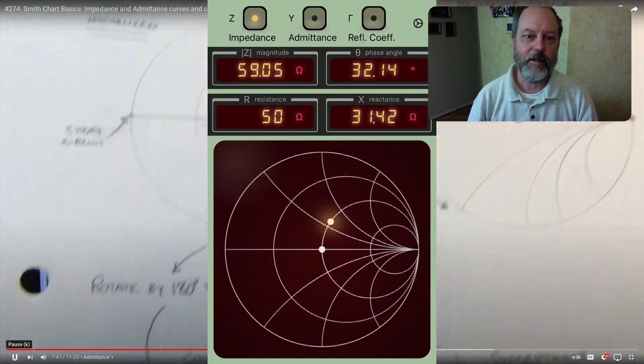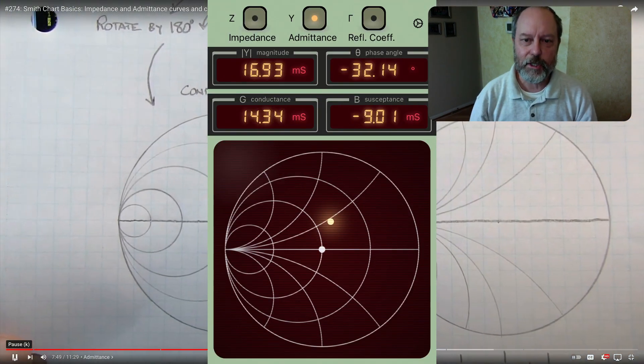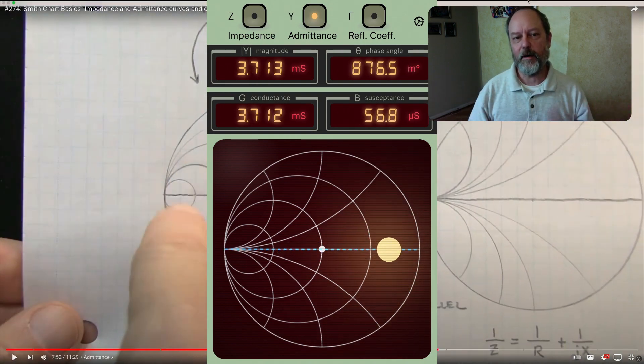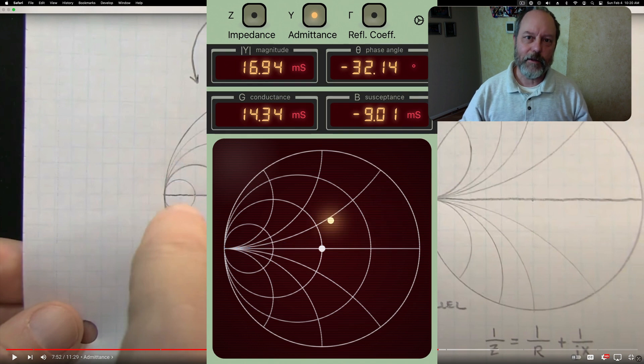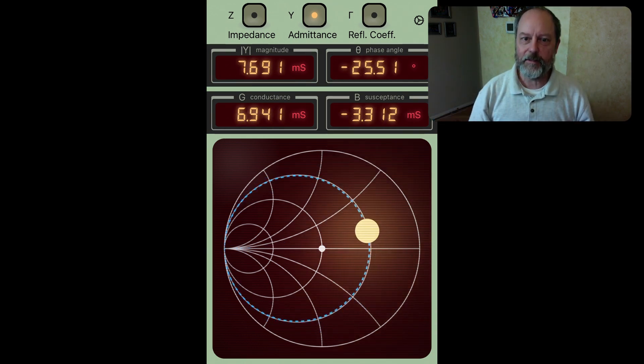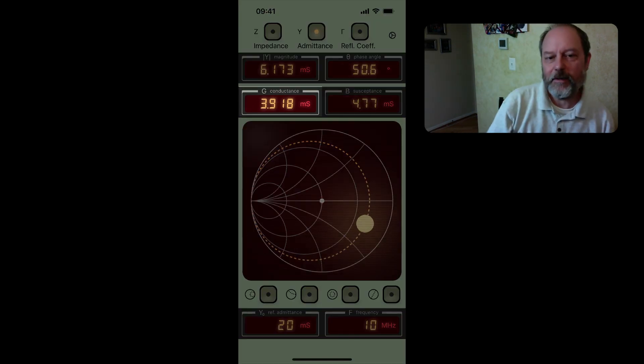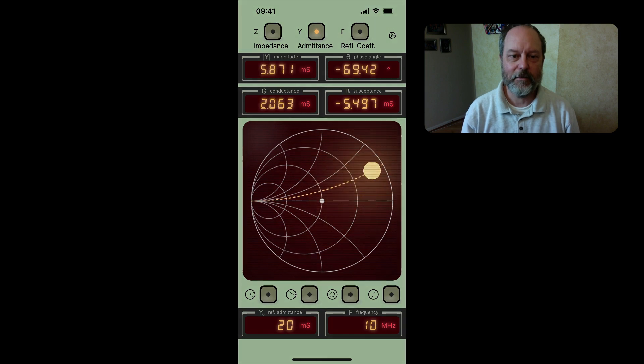And in impedance converter, you can flip to a different view to show admittance. And in that view, you'll see that the grid lines are arcs of constant susceptance and the circles are of constant conductance. And here you can see dragging out along a circle of constant conductance and likewise, dragging along an arc of constant susceptance.